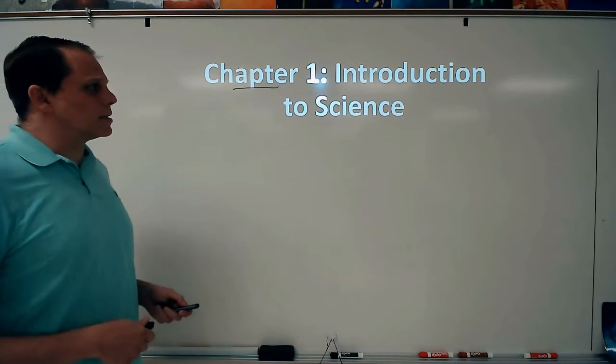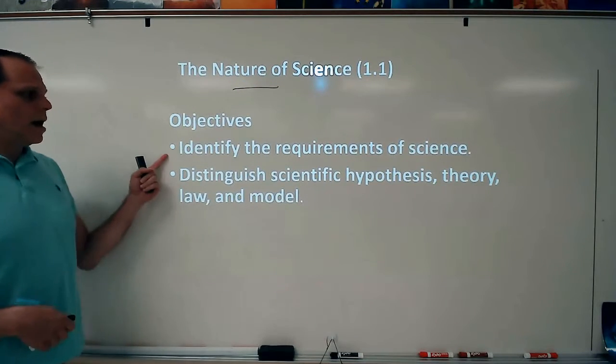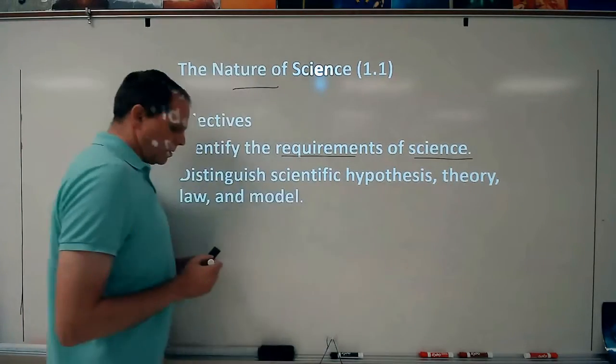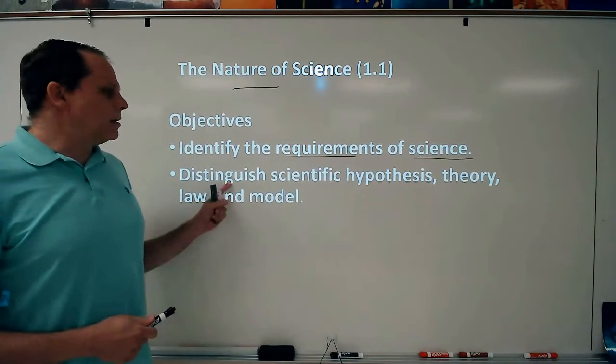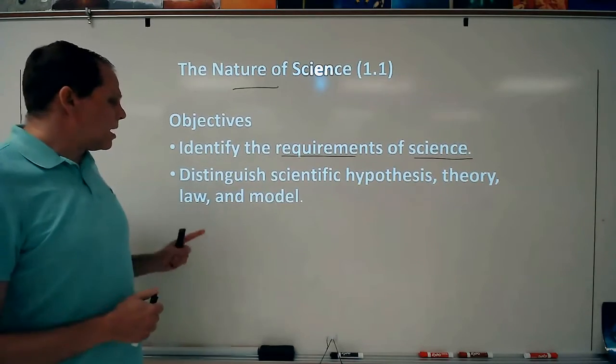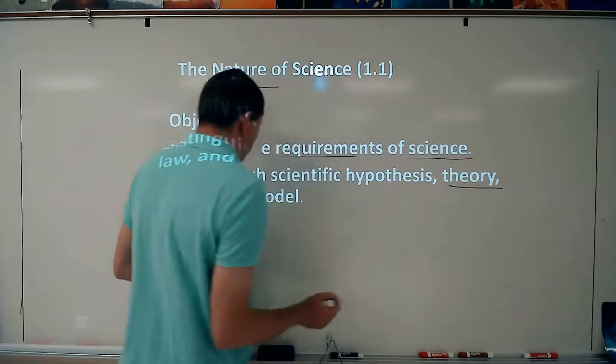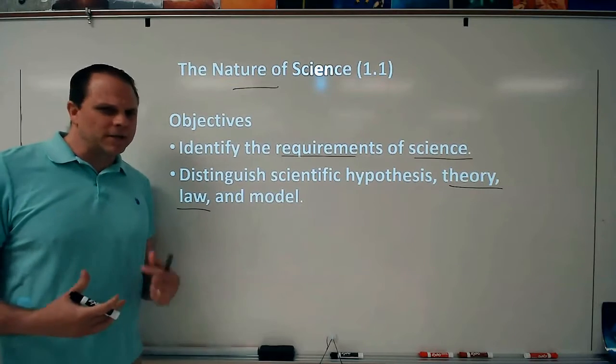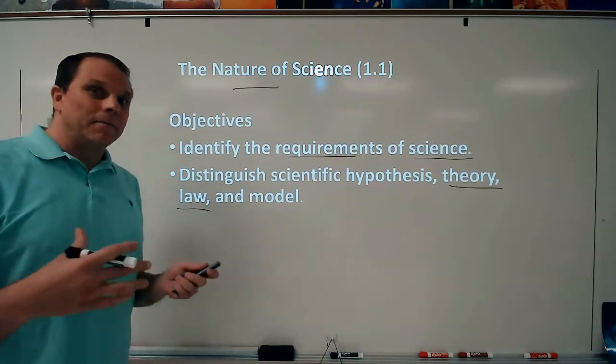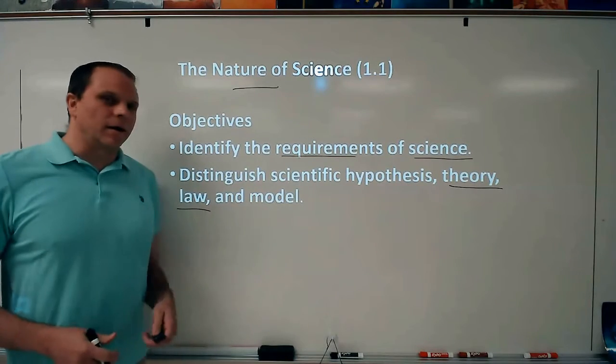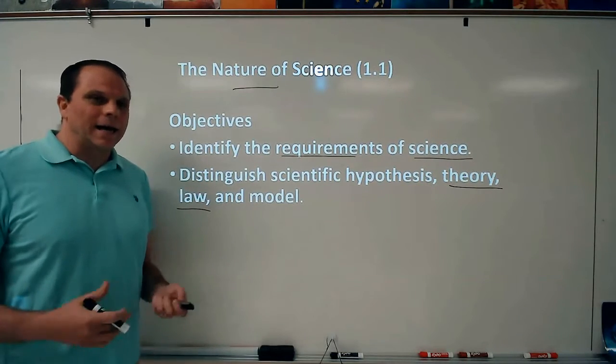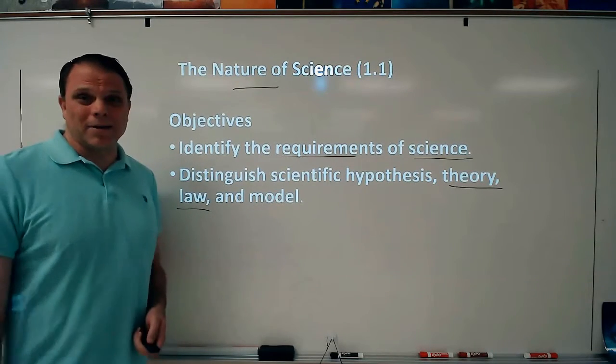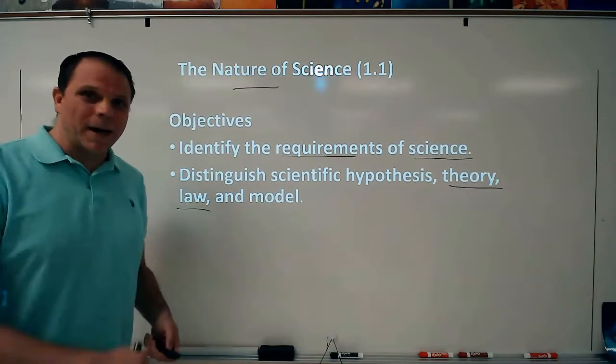This is chapter one, our introduction to science, and what we are going to be learning here today. These are just two of our objectives we're going to start with here: identify the requirements of science, what is it that makes science science, how do we define what science is, and then looking at scientific hypotheses, theories, laws, and models. Particularly, I want you to try to figure out the difference between theory and law because a lot of times we have some classical definitions of these two that are not really great. We're trying to introduce these newer concepts of what theory and law are into your brain here today. When I was a kid, I did not learn them this way, and I've taught them in a different way many other times, and I like the way that they're being taught here, so pay attention to that as we get to it.